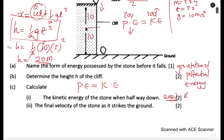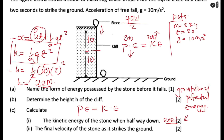Find the velocity of the stone as it strikes the ground. Sometimes the question says 'immediately before it strikes the ground.' As the stone moves down, velocity continues increasing and is maximum just before it hits the ground. At that point, all the potential energy has been converted to kinetic energy — potential energy equals zero, and kinetic energy equals 400 joules.